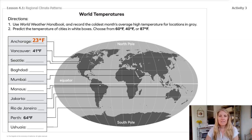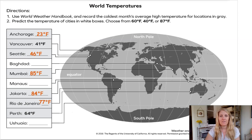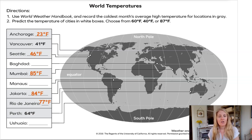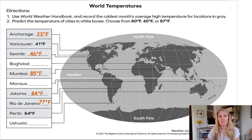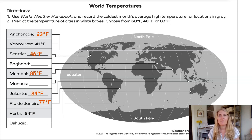Here is some more data for other cities. We know that Seattle is 46 degrees Fahrenheit, Mumbai is 85 degrees Fahrenheit, Jakarta is 84 degrees Fahrenheit, and Rio de Janeiro is 77 degrees Fahrenheit. If you want to, pause right here and see if you can trace your finger along each line all the way over to where those cities are in the world.